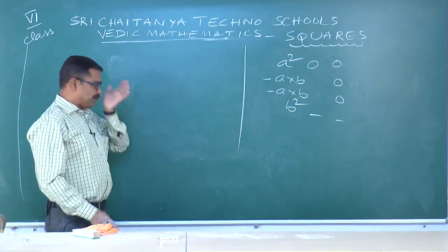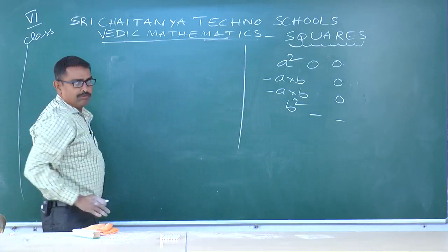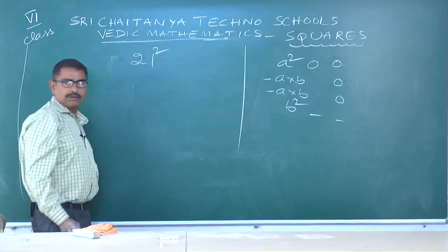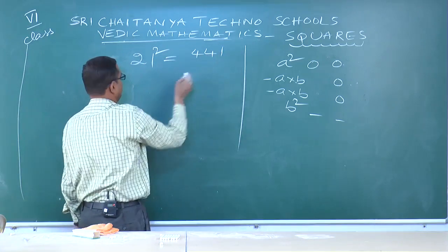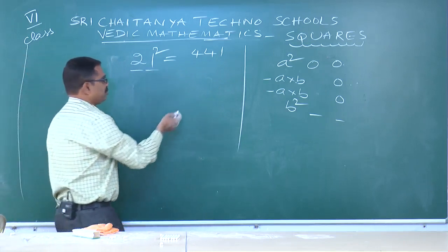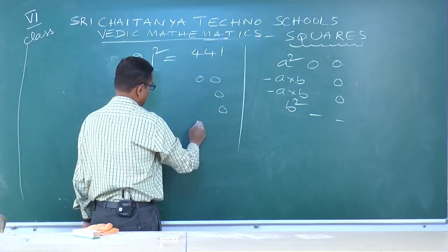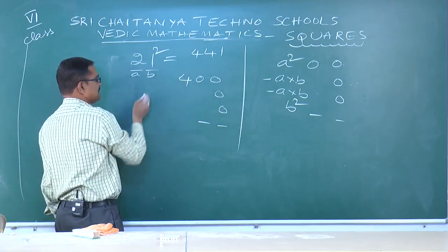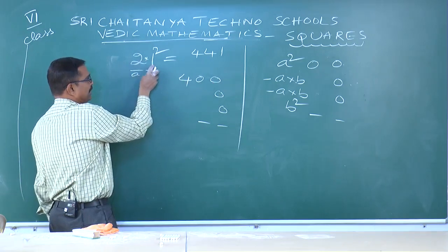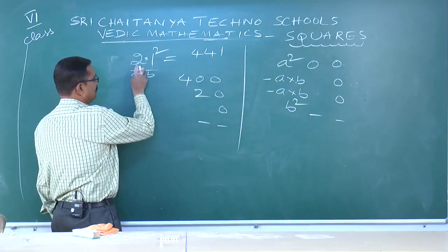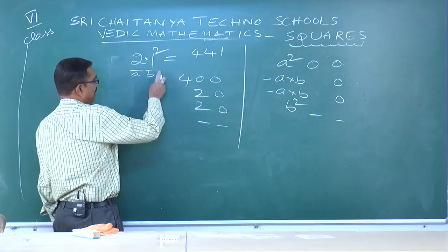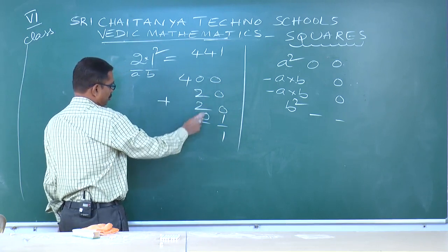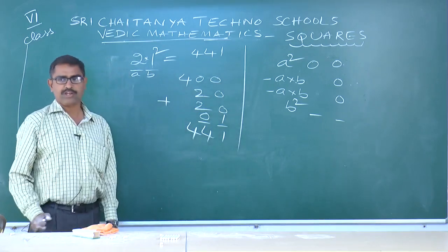Now how to use this formula practically. First example: 21². Here a=2, b=1. Put into formula: a²=2²=4, a×b=2×1=2 (first time), a×b=2×1=2 (second time), b²=1²=1. Add all: 0+0+0+0+1=1; 2+2=4; 4. Answer is 441.